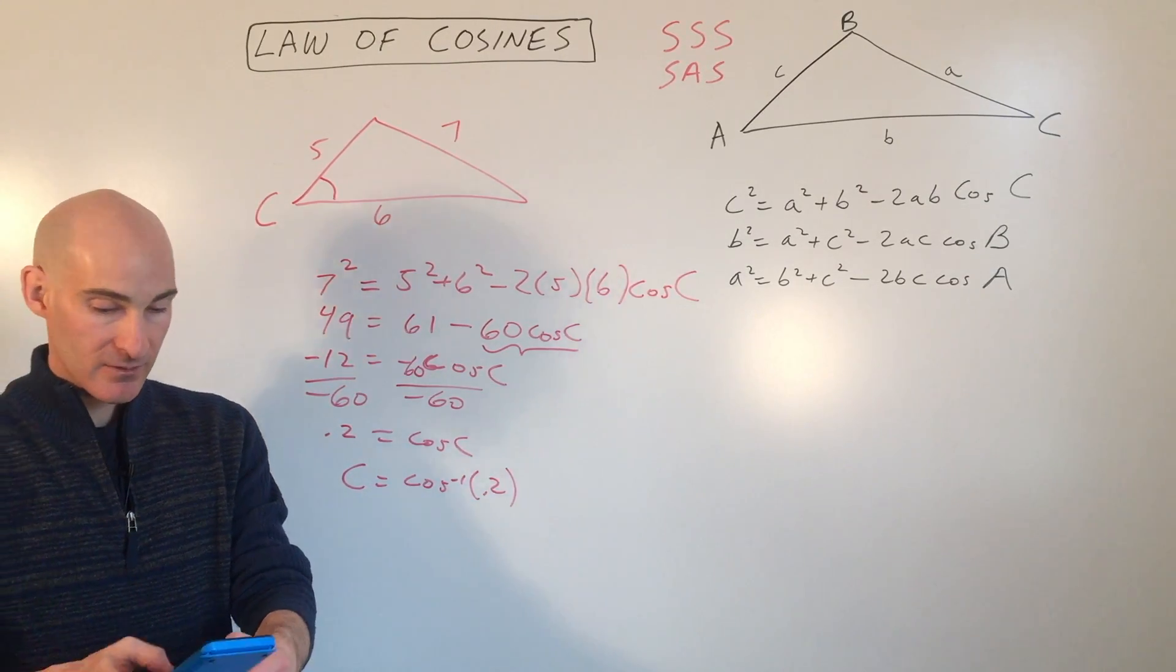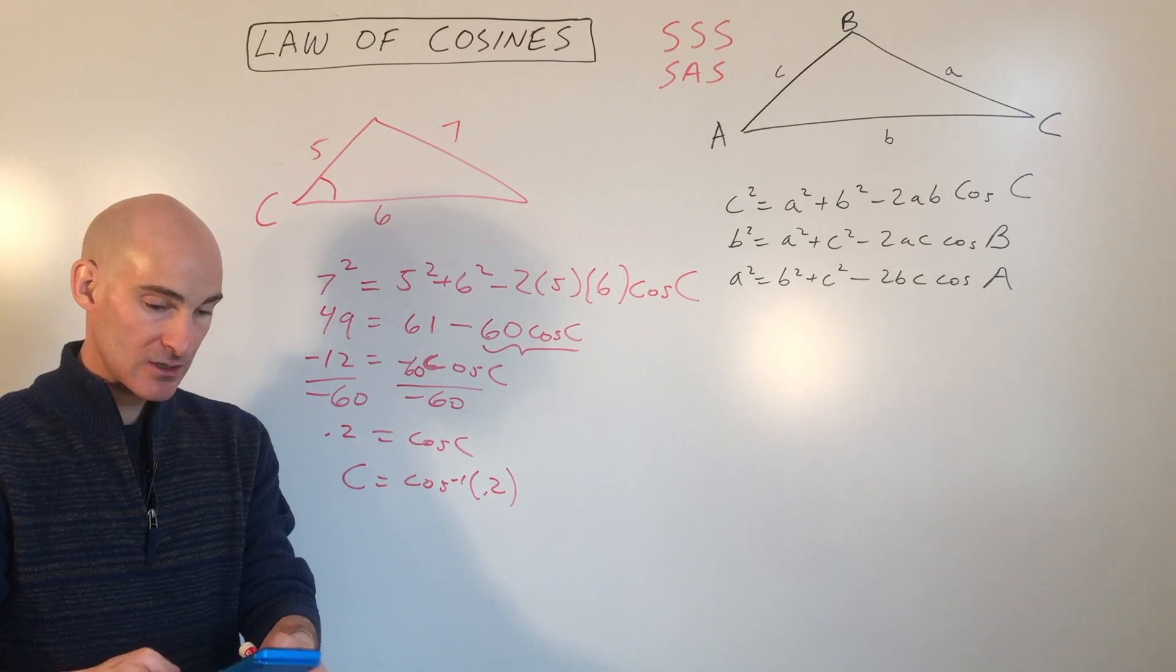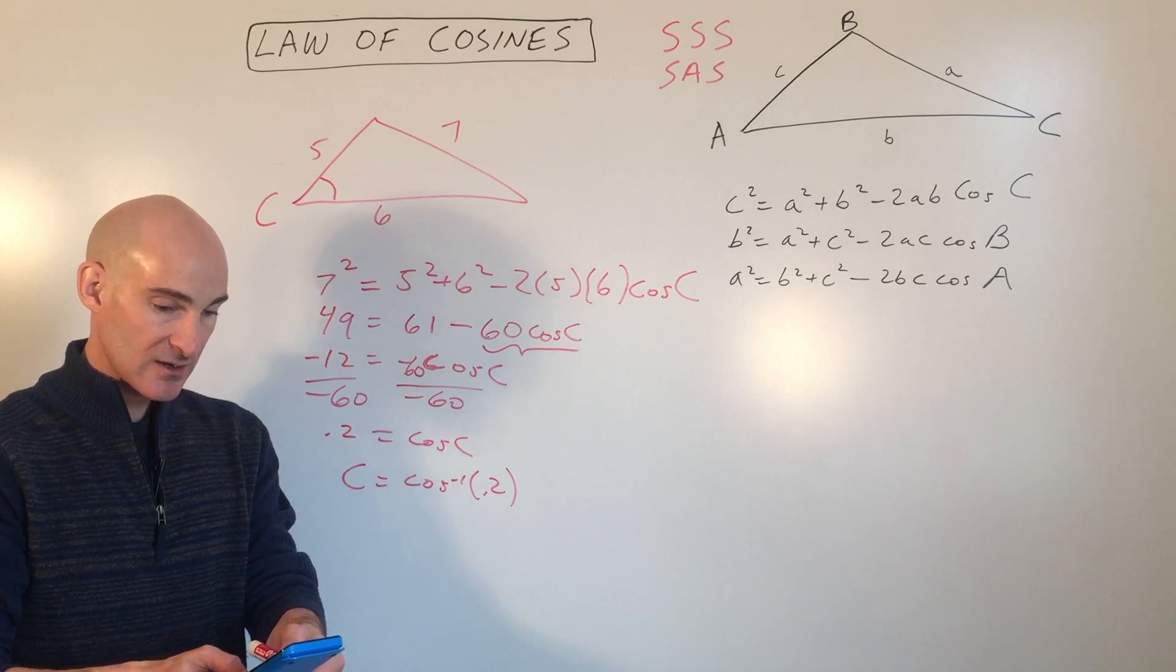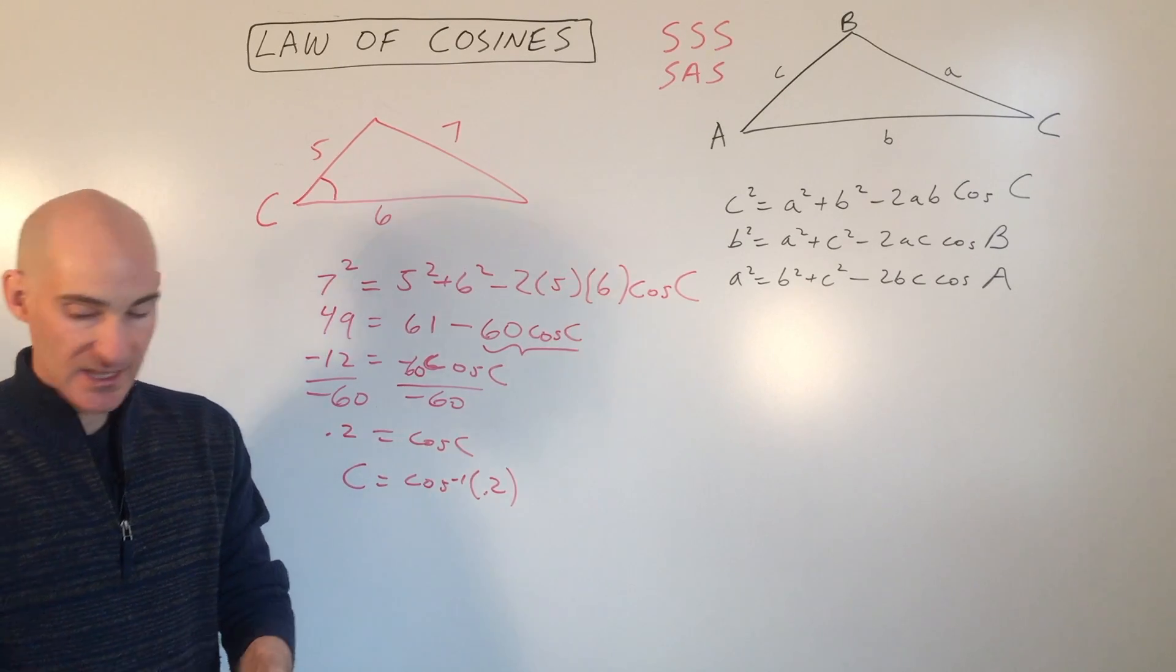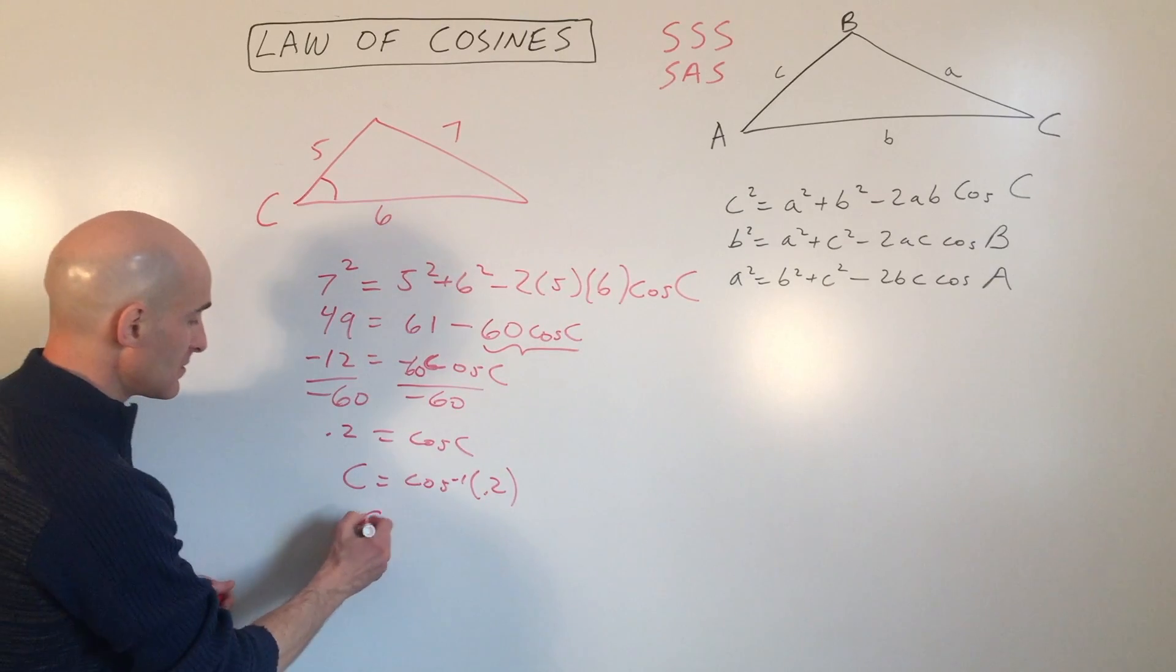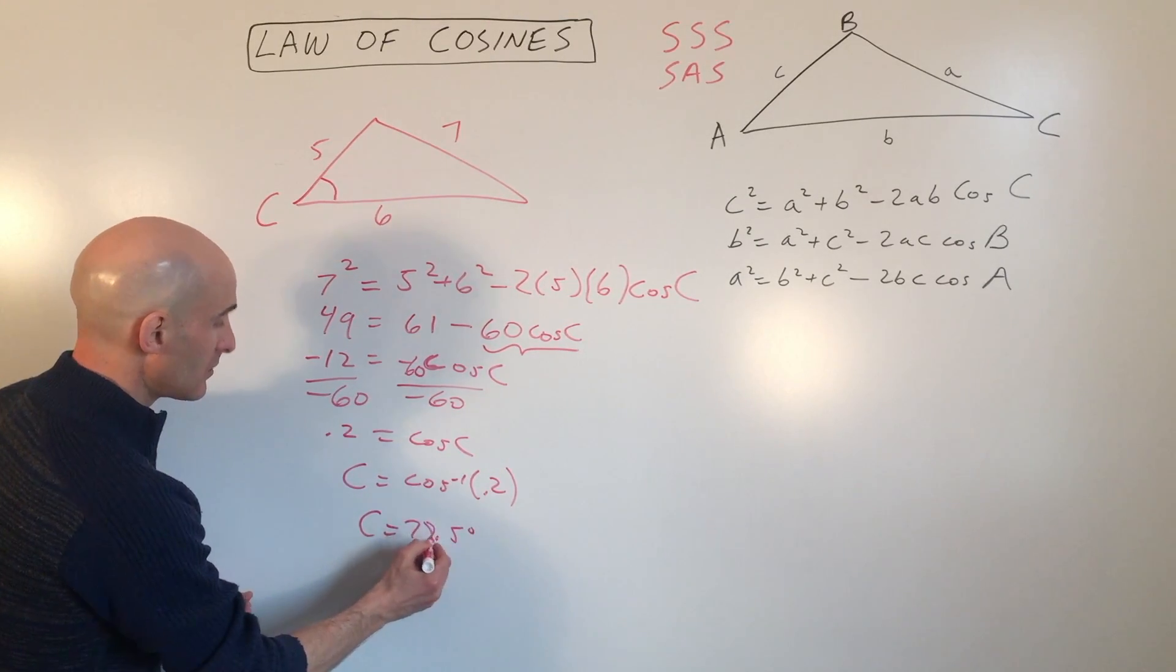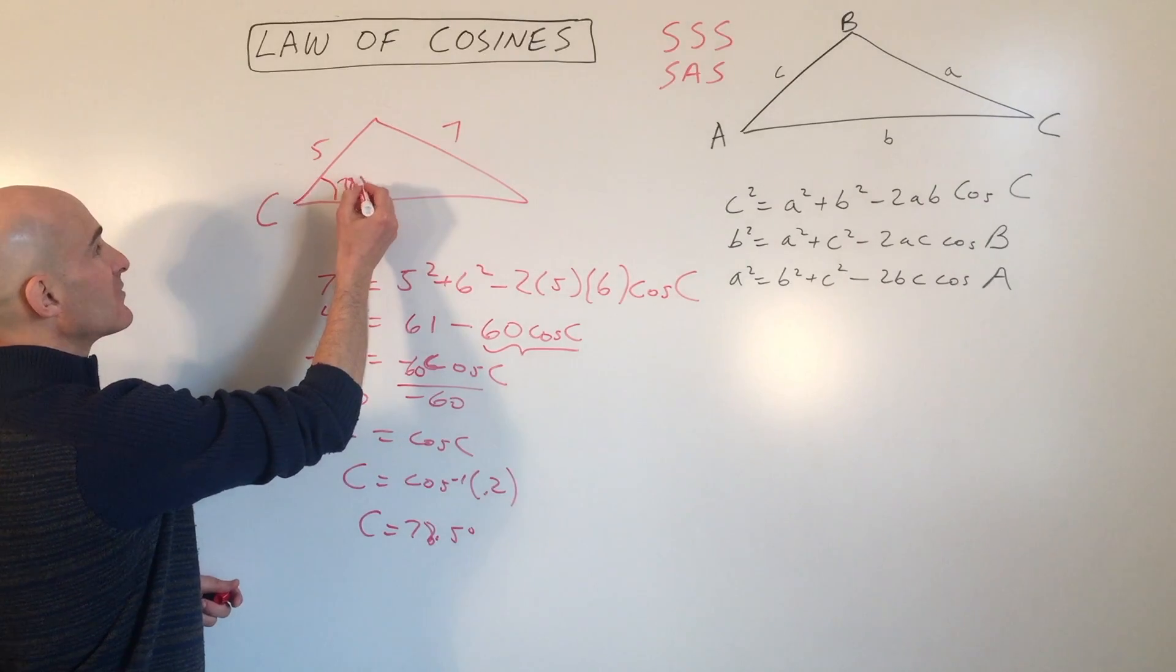We have, let's see, we'll do it in degrees. Degrees, cosine inverse, 0.2, 78.5 degrees. So that's this angle right here, 78.5.